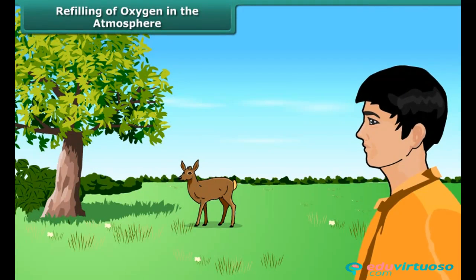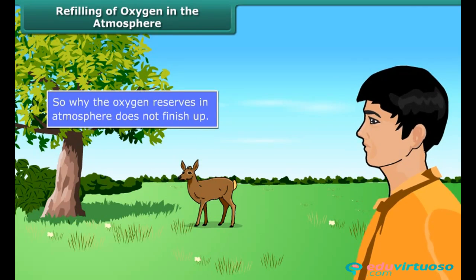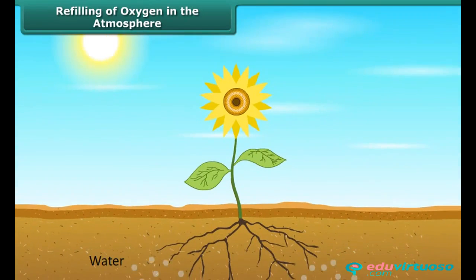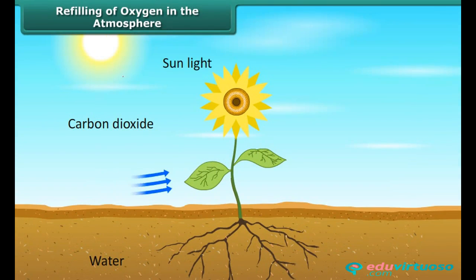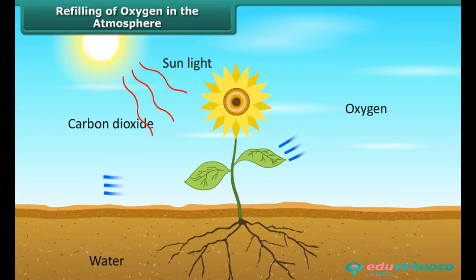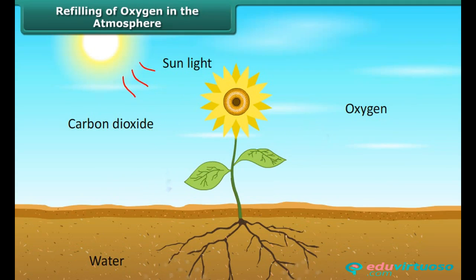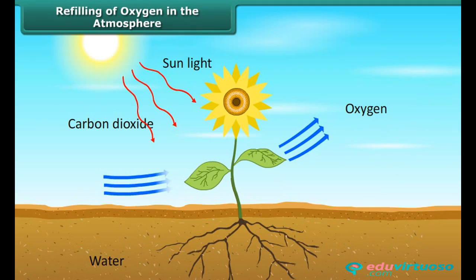Several billions of humans, animals, and other organisms are consuming a huge amount of oxygen from the atmosphere every day. So why do the oxygen reserves in the atmosphere not finish up? The plants produce oxygen during photosynthesis and release it into the atmosphere. Plants also consume oxygen for respiration, but they produce more of it than they consume. So the plants silently save us from dying without even being noticed.